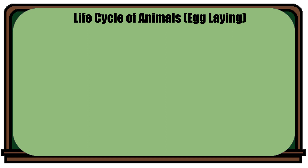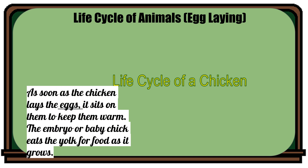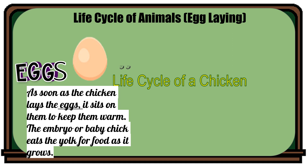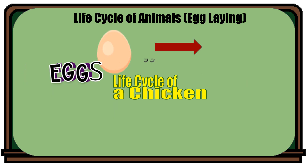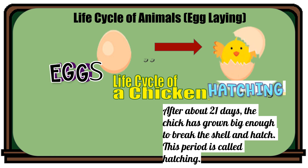Now class, let us find out the stages in the life cycle of egg-laying animals, such as the life cycle of a chicken. As soon as the chicken lays eggs, it sits on them to keep them warm. The embryo, or baby chick, eats the yolk for food as it grows. After 21 days, the chick has grown big enough to break the shell and hatch. This period is called hatching.